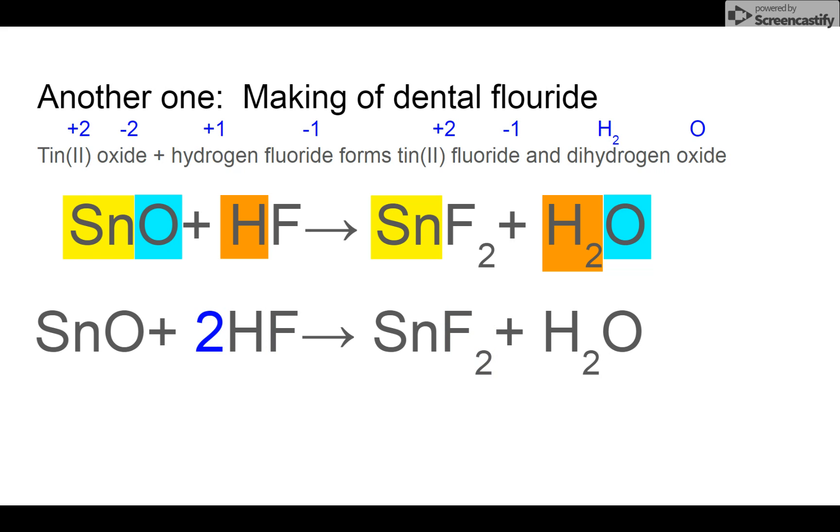This is what they do to make the fluoride in your toothpaste. Tin oxide is a rust of tin. And my goodness, you would not want to encounter hydrogen fluoride. Your stomach acid is hydrogen chloride. Hydrogen fluoride can melt glass. When they mix the two, you get the stuff you coat your teeth with and water. Now, what if we didn't balance the equation? Can you imagine if they made toothpaste and some of this hydrogen fluoride was left over at the end and in your toothpaste, your face would fall off?